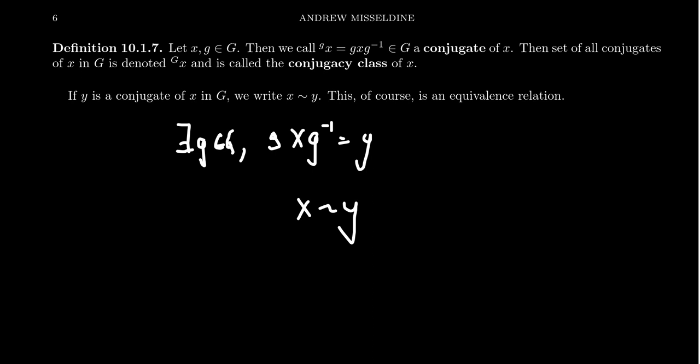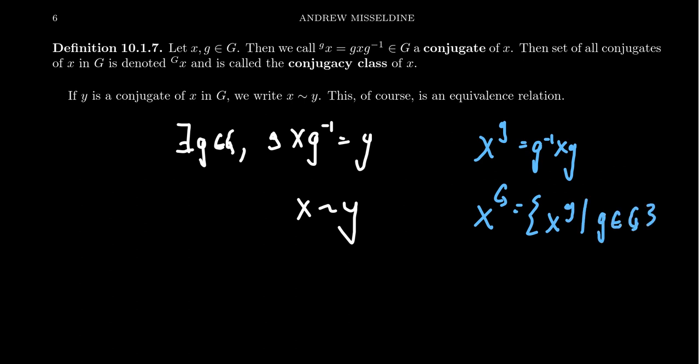You could define conjugation a little bit differently. In my opinion the more common way is to define x to the g as g-inverse x g, and the corresponding conjugacy class of x you would denote as x to the capital G — the set of all elements x to the g where g ranges over G.